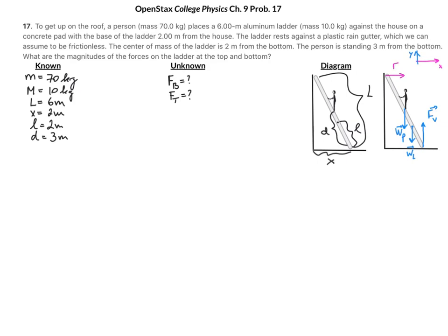Since the rain gutter is frictionless, the wall exerts only a horizontal normal force. There is also a friction force at the base that keeps the ladder from slipping — I'll call that F-sub-h for horizontal. So at the base of the ladder we have a horizontal force and a vertical force, and at the top we have just a horizontal force. The force at the bottom is the square root of F-h squared plus F-v squared, and the force at the top is just the wall force.